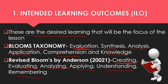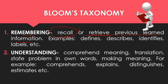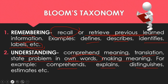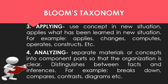Let us proceed to the cognitive categories with example keywords in the new version by Anderson. Number one is remembering — recall or retrieve previously learned information. Keywords include defines, describe, identifies, and labels. Second is understanding — comprehend meaning, translate, state a problem in own words. Keywords include explain, distinguishes, and estimates. For example, an objective under remembering: define the old version of Bloom's Taxonomy; under understanding: explain or distinguish the differences between the old and new versions.